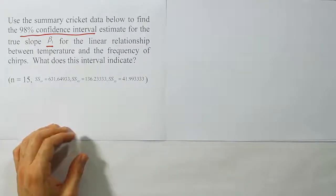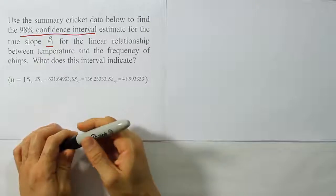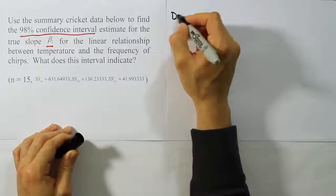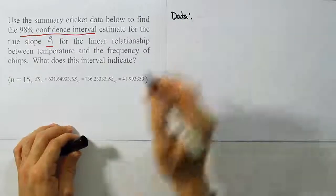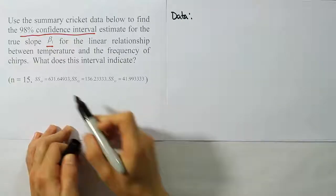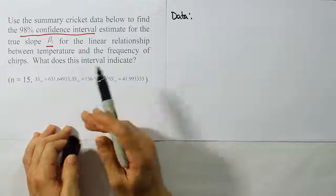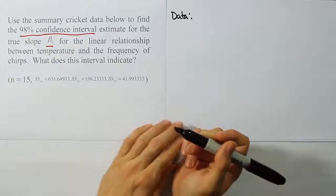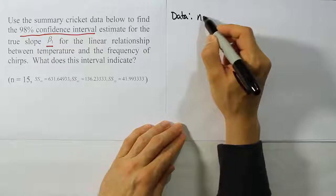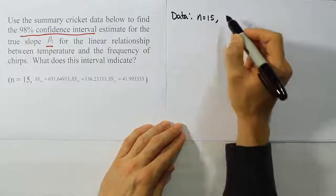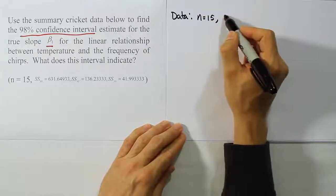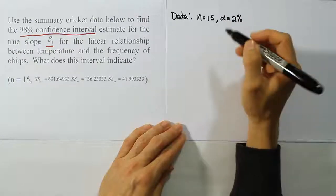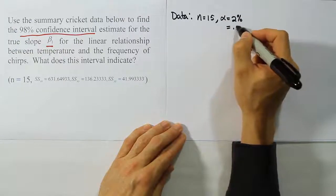The data step is actually the hardest part of the procedure, because we have a lot of steps to work out when we go to calculate the values. They have given us the sum of square values and the n for the problem. We also have the confidence level. The n is 15, and the confidence level of 98% leads to alpha of 0.02.